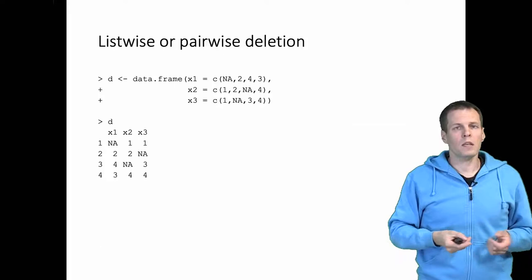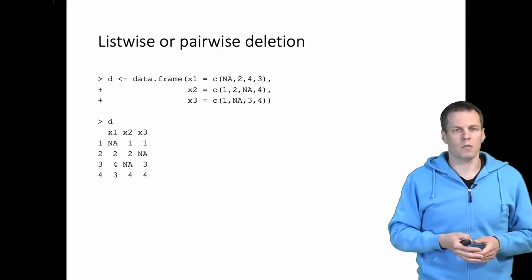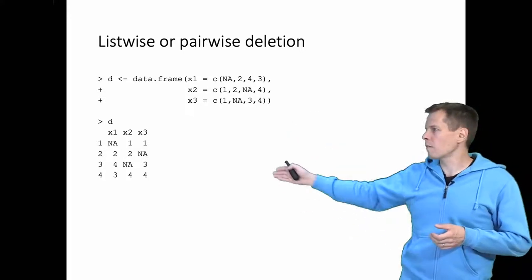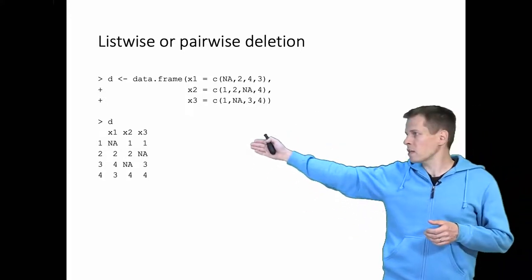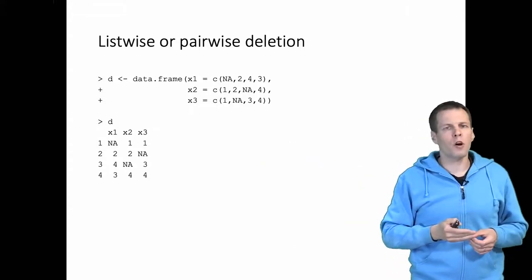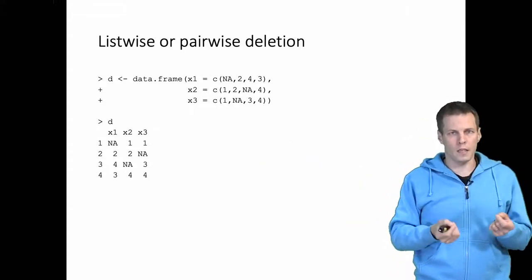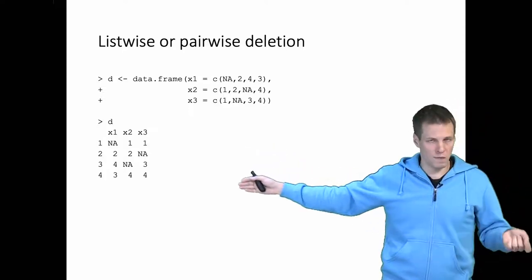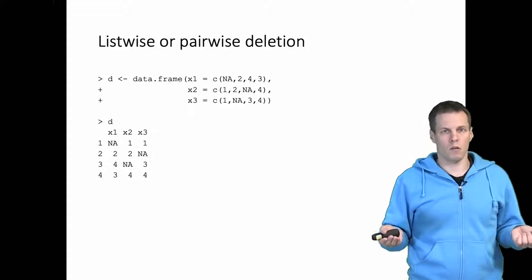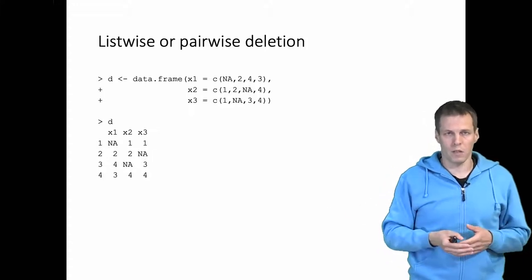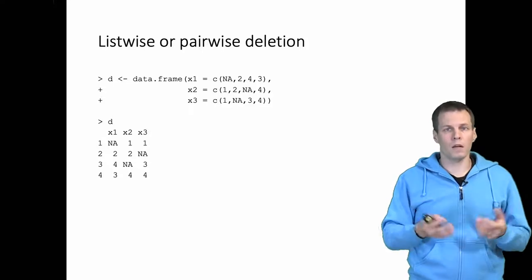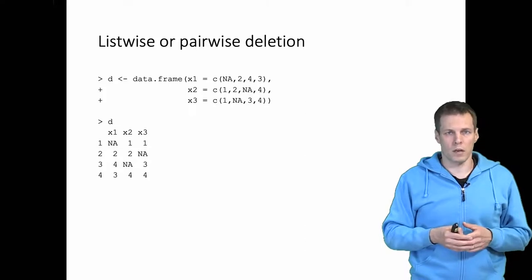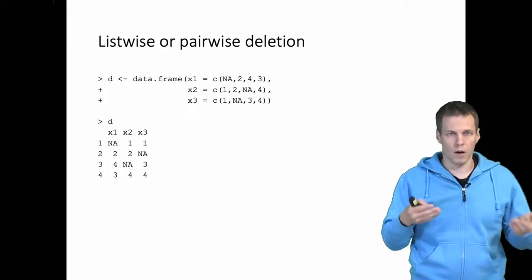What is the difference between list-wise deletion and pair-wise deletion? In this example data set generated with R, we have three variables — x1, x2, and x3 — for four observations. If we drop all cases with any missingness, we drop the first three observations and only one observation remains, so we cannot calculate any correlations. Applying a correlation matrix calculation here gives us no results because it requires complete cases.